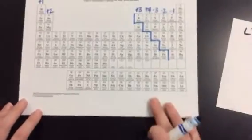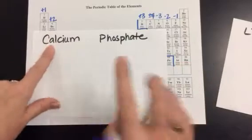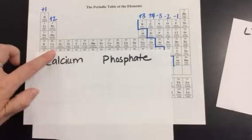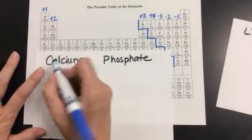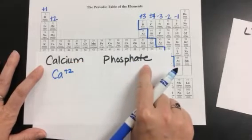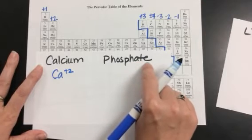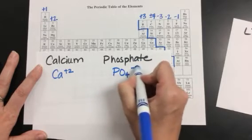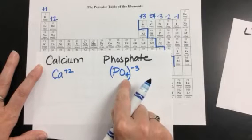Now to do another example: I have calcium and phosphate pairing together. Calcium lives in group 2, so its oxidation number is positive 2 — Ca plus 2. Phosphate is a polyatomic ion; I know that because it ends in A-T-E. For phosphate, we know that it's PO4, negative 3.